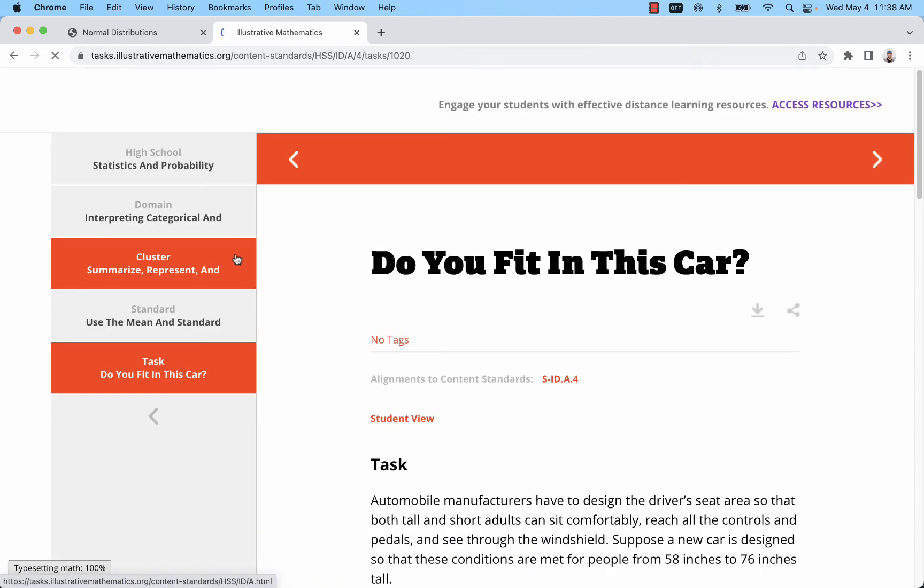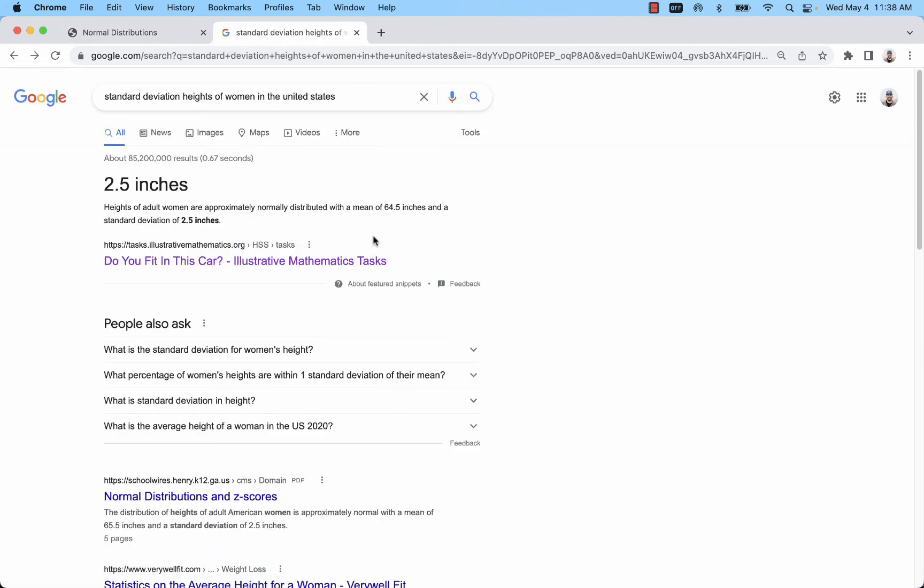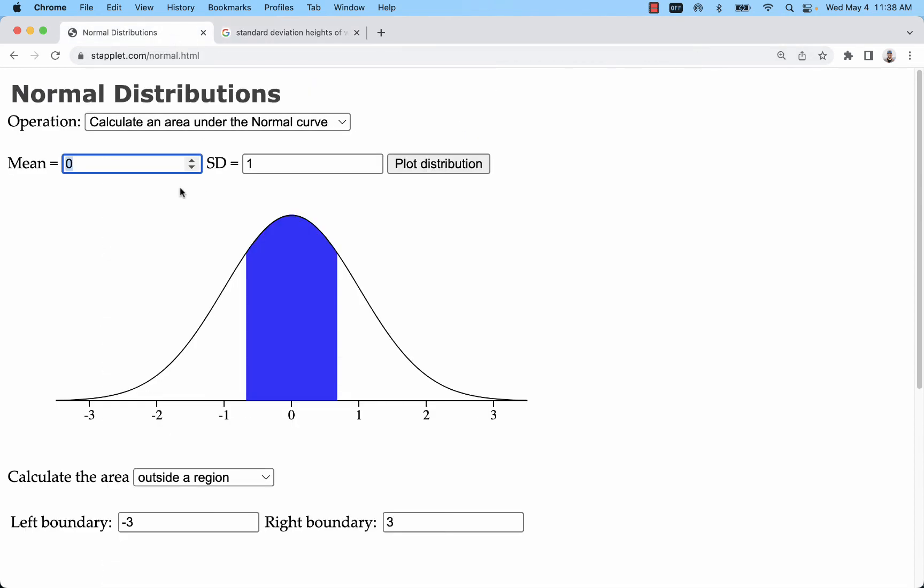This is saying 2.5 standard deviations. Now this may not be the most reliable source. It's an example problem. But let's go ahead and use it. Here we see 64.5 inches. So that's 5 foot 4 and a half. But we'll go with those numbers, 64.5 and 2.5.